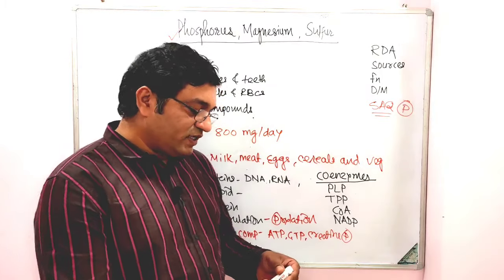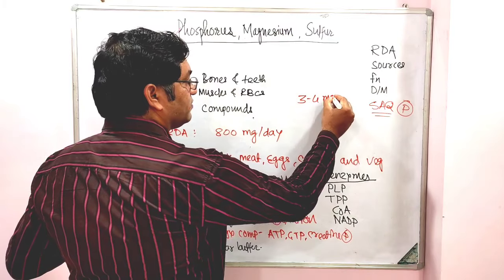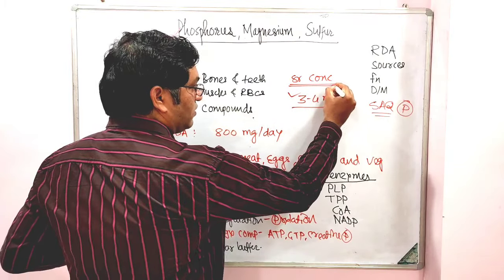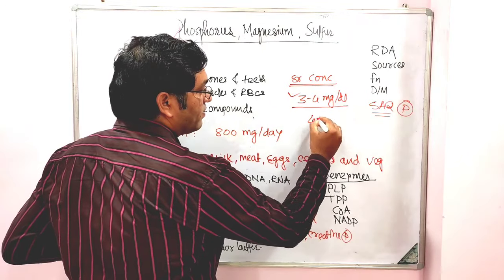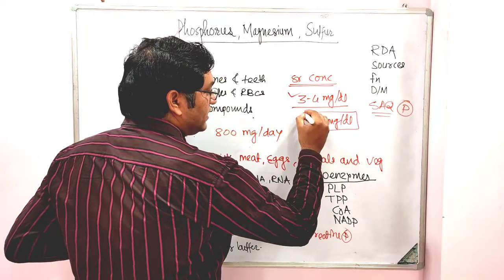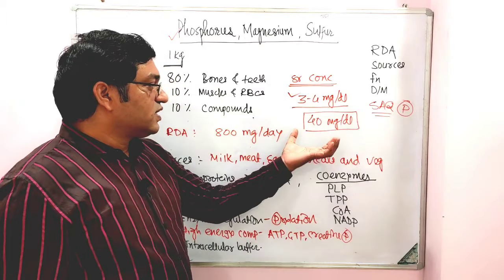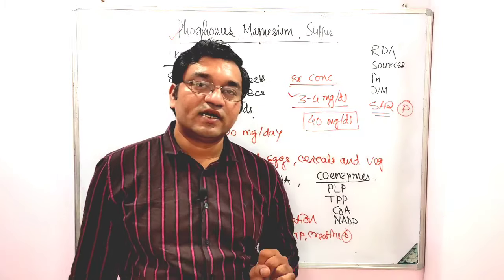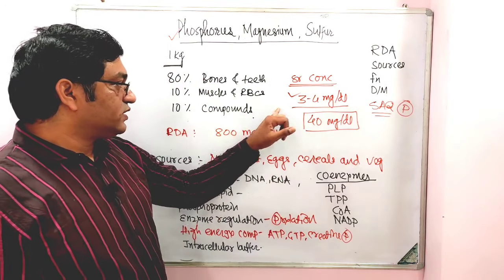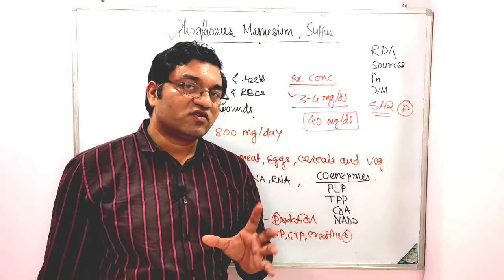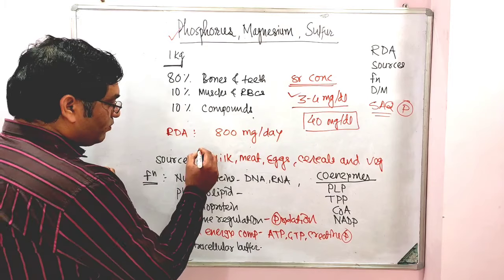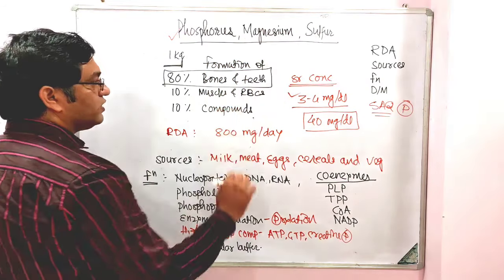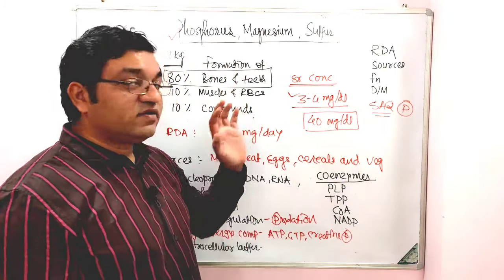The serum concentration of phosphate is near about 3 to 4 milligram per deciliter, while in blood it is near about 30 to 40 milligram per deciliter because RBCs and WBCs have more phosphorus. The main important function of phosphorus is also its role in the formation of bones and teeth along with calcium.